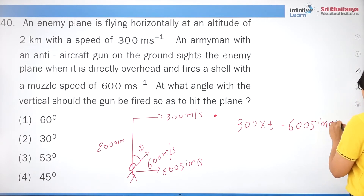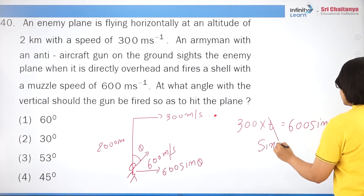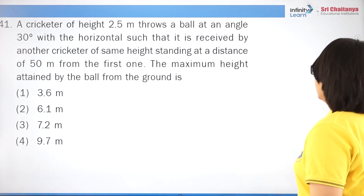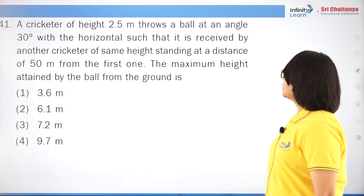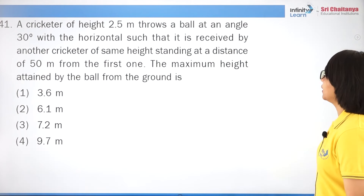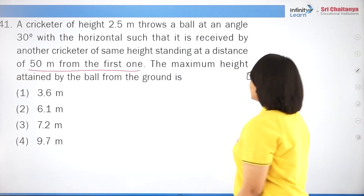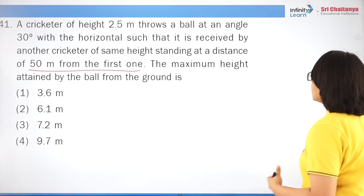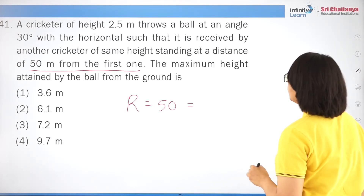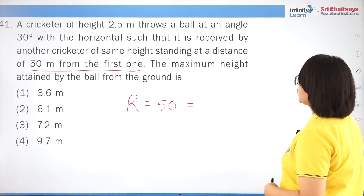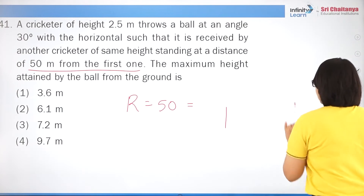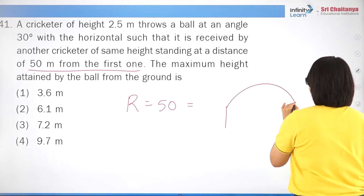Question 8: a stone is projected at 10√2 m/s at 45° to the horizontal. Average velocity equals total displacement divided by time. Since displacement equals range = U·cosθ × T, dividing by T gives average velocity = U·cosθ = 10√2 × cos45° = 10√2 × (1/√2) = 10 m/s, which is option 1.